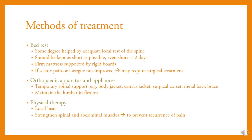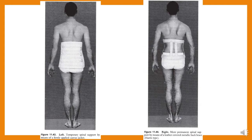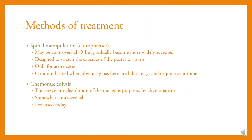Bed rest provides some degree of help through adequate local rest of the spine but should be kept as short as possible — even as short as two days — on a firm mattress supported by rigid boards. If there is sciatic pain or no improvement, surgical treatment may be required. Orthopedic apparatus and appliances such as a temporary spinal support — body jacket, canvas jacket, surgical corset, or metal back brace — help maintain the lumbar spine in flexion. Physical therapy includes local heat and strengthening of spinal and abdominal muscles.